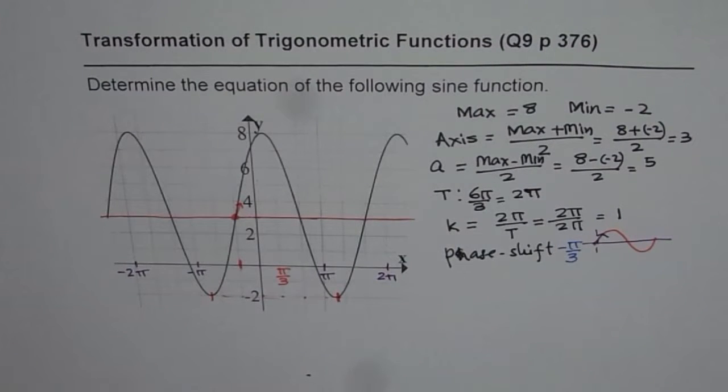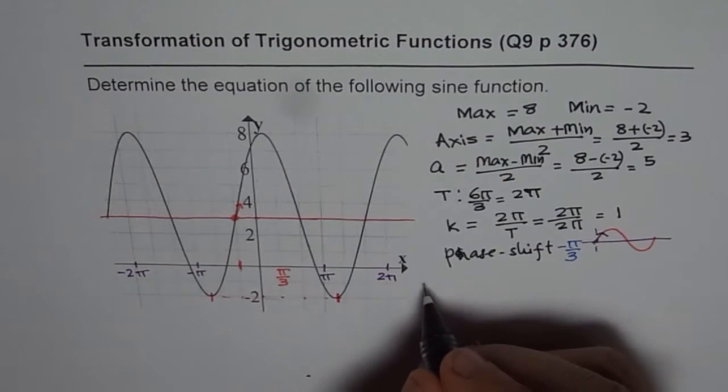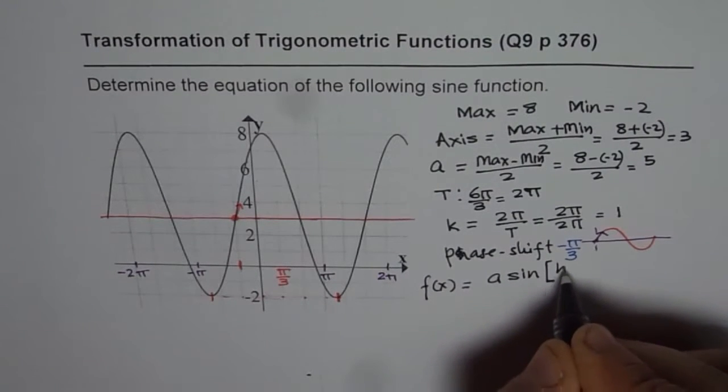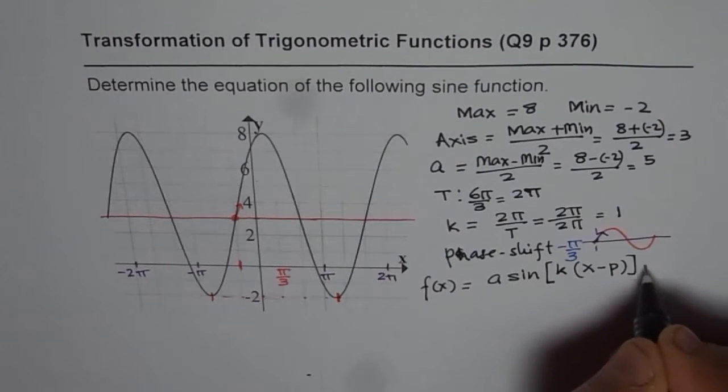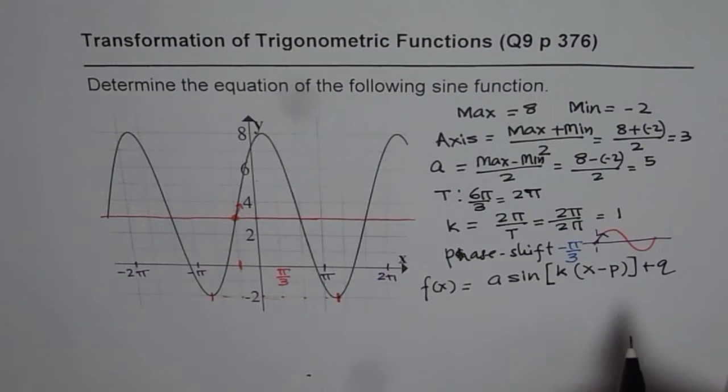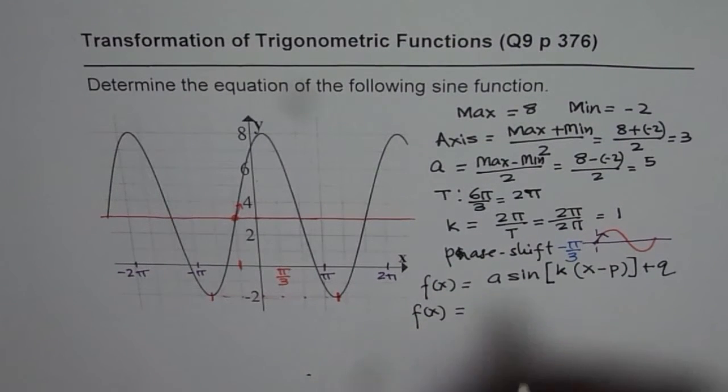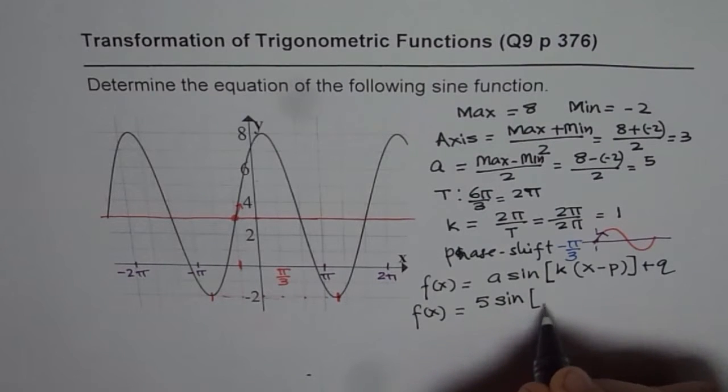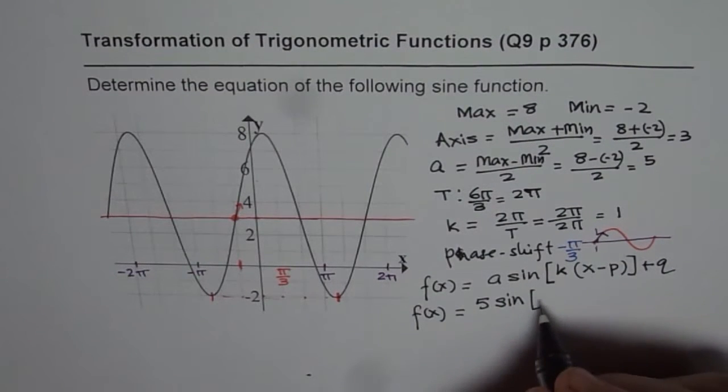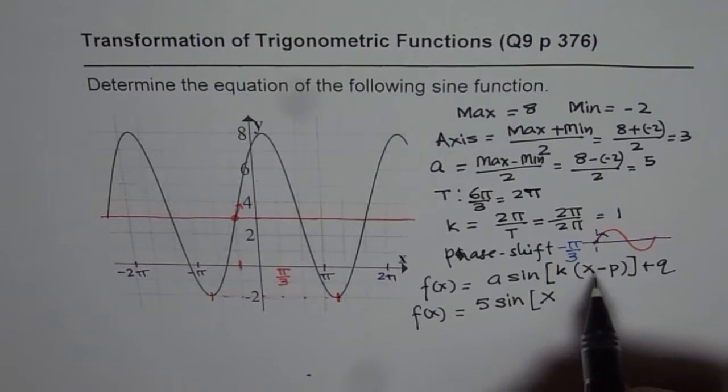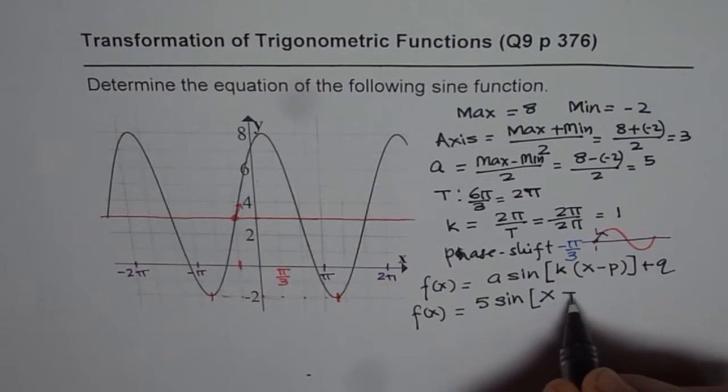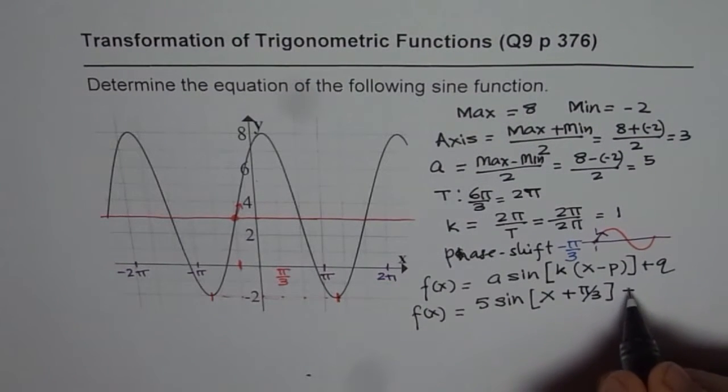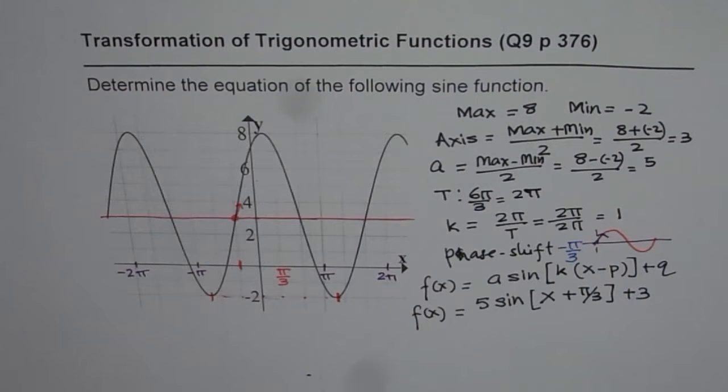Now we can write down our transform trigonometric function. Generally, we write in the form of f(x) equals A times sine, within brackets, k times x minus phase shift plus q. Now we have all these parameters in place. So we can write our function f(x) as amplitude is known to us as 5, sine of, the value of k is 1 so there is no need to write that, x minus p, p is minus π by 3, minus minus becomes plus. So we will write plus π by 3. And q is axis, which is at 3, so we will write plus 3. So that becomes the sinusoidal function for the given graph.